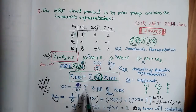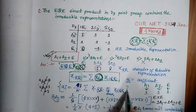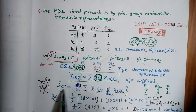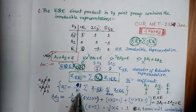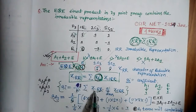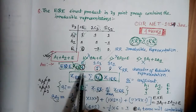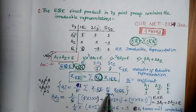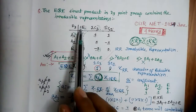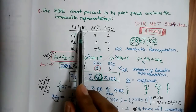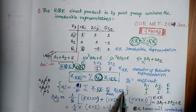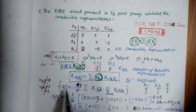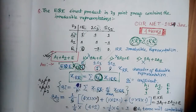The decomposition formula is: aᵢ = (1/h) Σ gᵢ · χ(RR) · χᵢ(IRR), where h is the order of the group. For the D3 point group, the order h = 6. The characters of the reducible representation we produced are 4, 1, 0. The gᵢ values are the class sizes from the character table: 1 for E, 2 for C3, and 3 for C2.